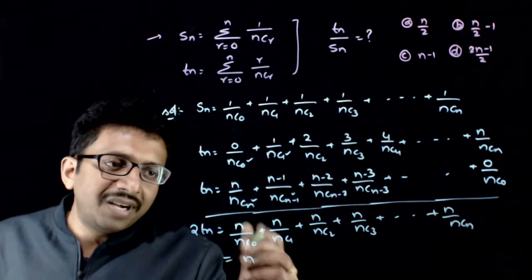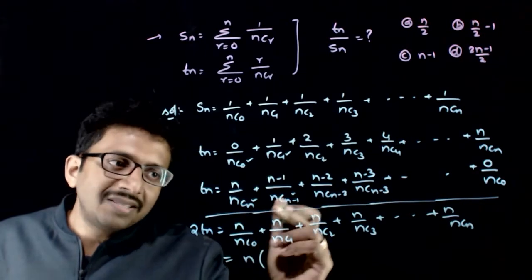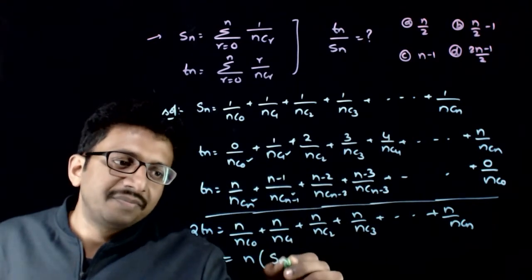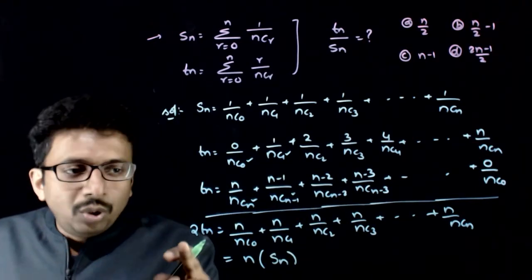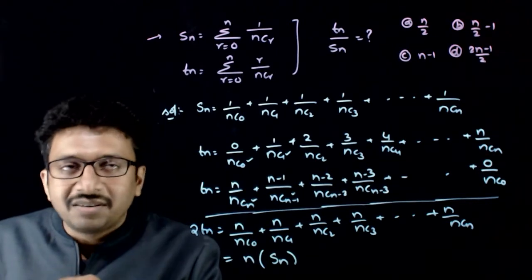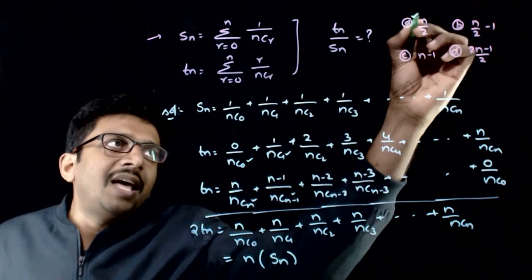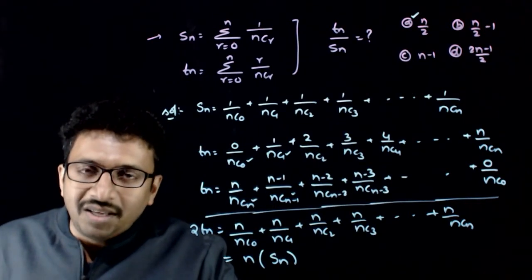That is nothing but if you take n as common: 1 by nC0 plus 1 by nC1 plus 1 by nC2 plus 1 by nC3 and so on, is nothing but Sn. So 2Tn is equal to n times Sn. So you are asked to find Tn by Sn, which is nothing but n by 2. Option A is the right answer. Thank you.